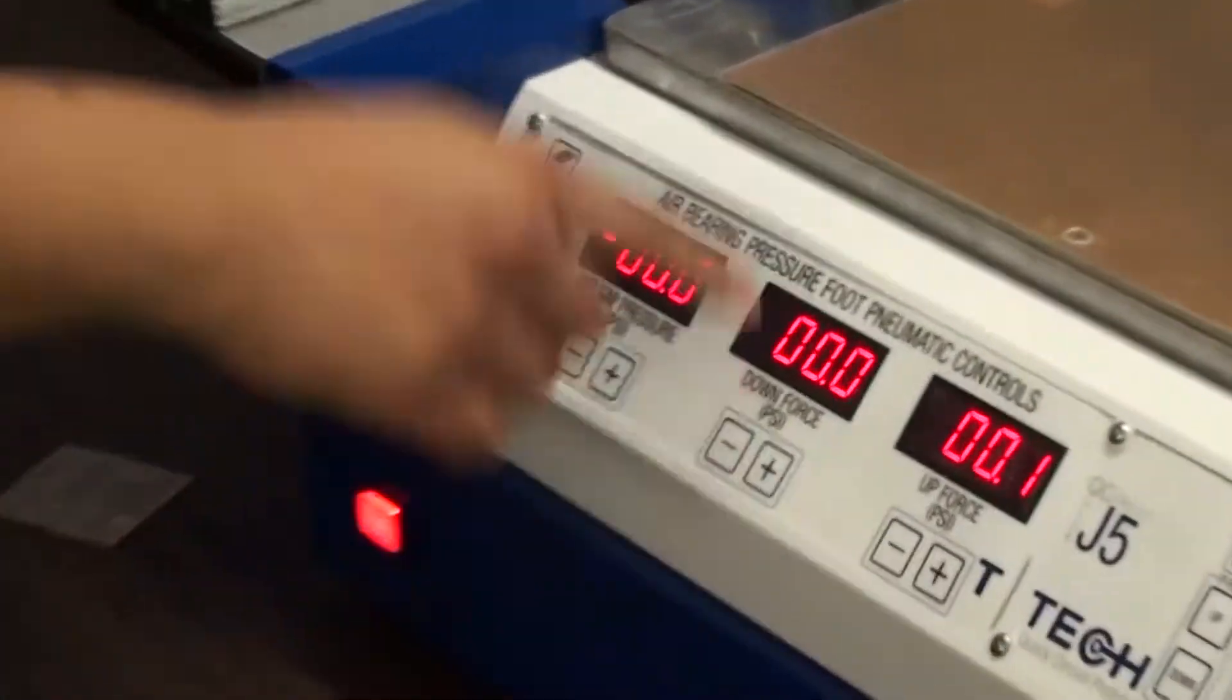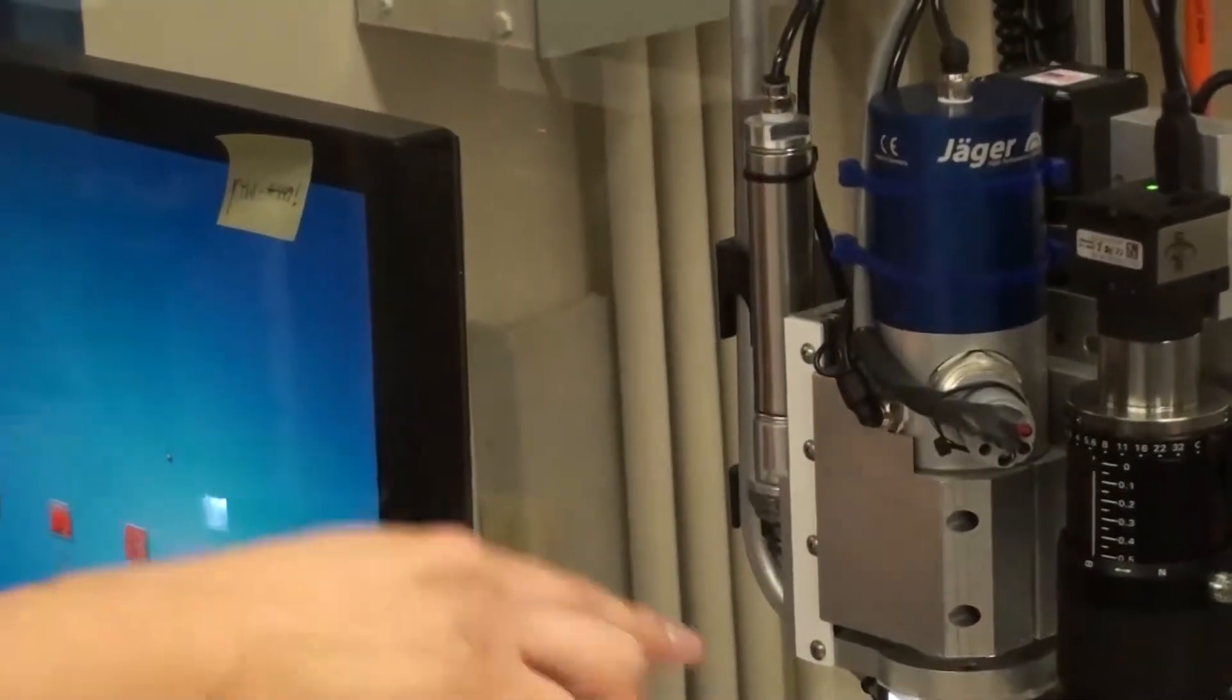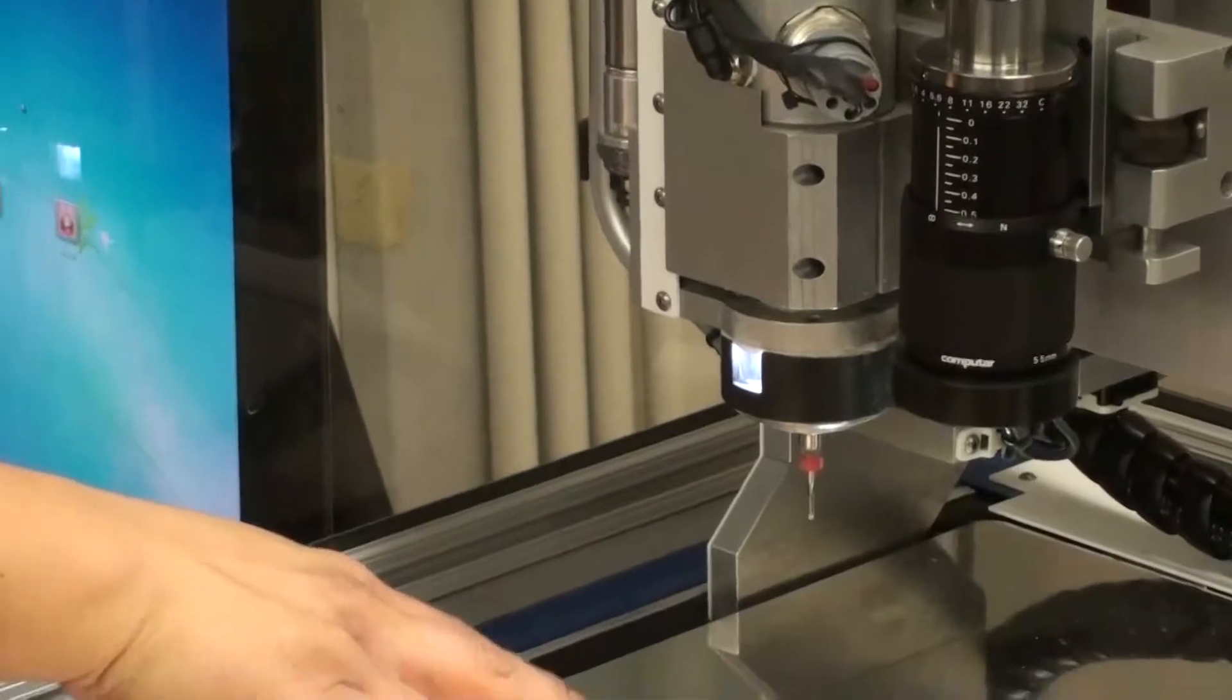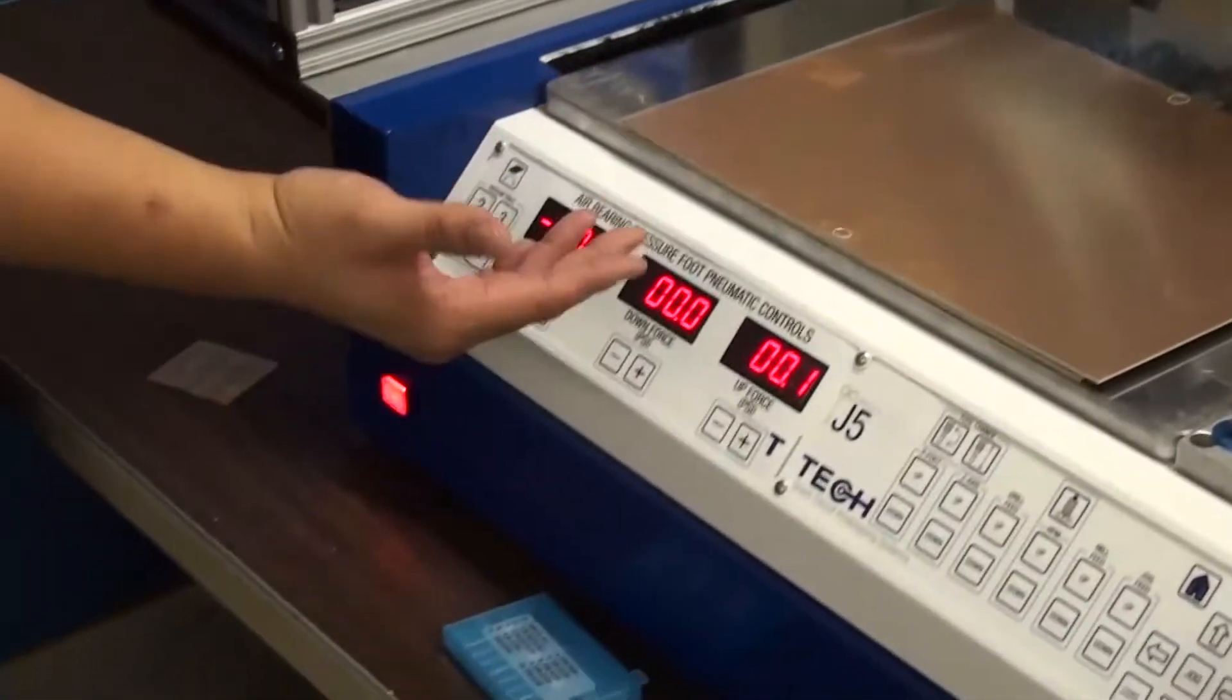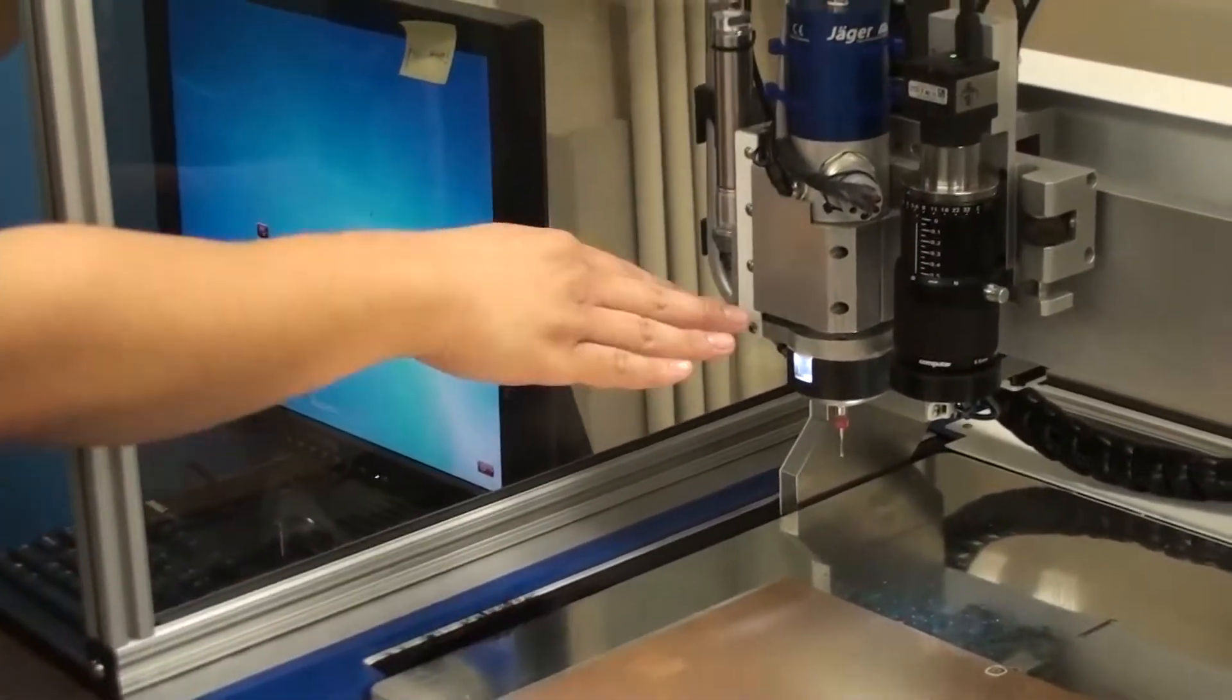This down force controls how much force, how much pressure is applied to the cylinder here to force the pressure foot down towards the board. And finally, up force is how much pressure is put into the cylinder from the bottom to push the tool head back up to return to the home position here.